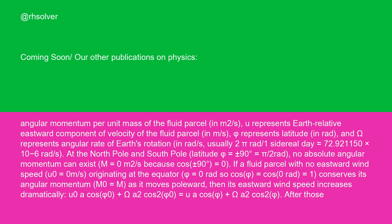At the north pole and south pole, latitude φ = ±90° = ±π/2 rad, no absolute angular momentum can exist: M = 0 m²/s, because cos(±90°) = 0.